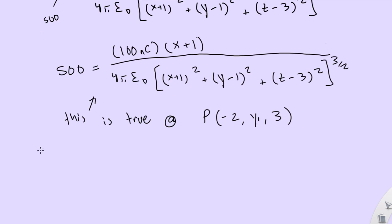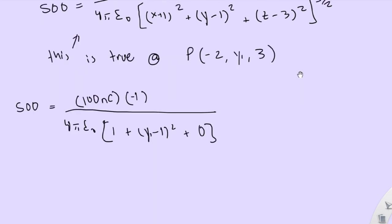So all we'd have to do is simply plug this in. 500 equals 500. And equals—X is negative 2 plus 1 is negative 1. 4πε₀. 4πε₀. Again, you're gonna have a negative 1 here, and it's squared, so it's gonna be a 1. Plus Y minus 1, that is technically Y1 minus 1. And then Z is 3 minus 3 is 0, because 3 minus 3 is 0. And from there you would get that...